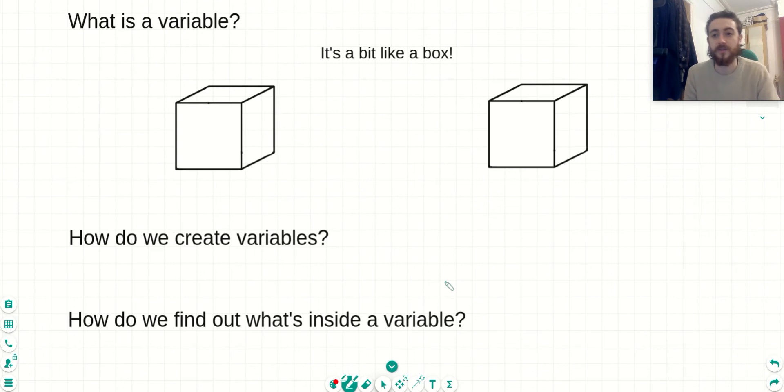So first things first, what is a variable? In my mind, I like to think of a variable as a bit like a box. Now, I have a box here, and this is going to be our variable. So there are two things we need for a variable. The first thing we need is a label on the front of it, and we call this label the name of the variable. And inside the variable, we want to put some data or stuff. It's as simple as that. A variable is a box with a name and some data inside of it.